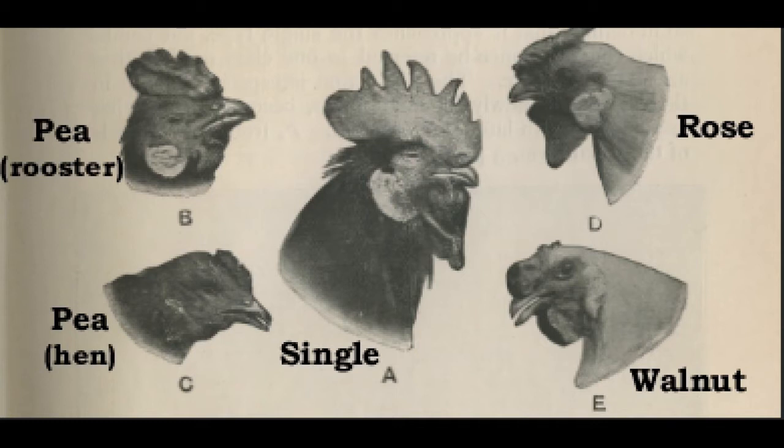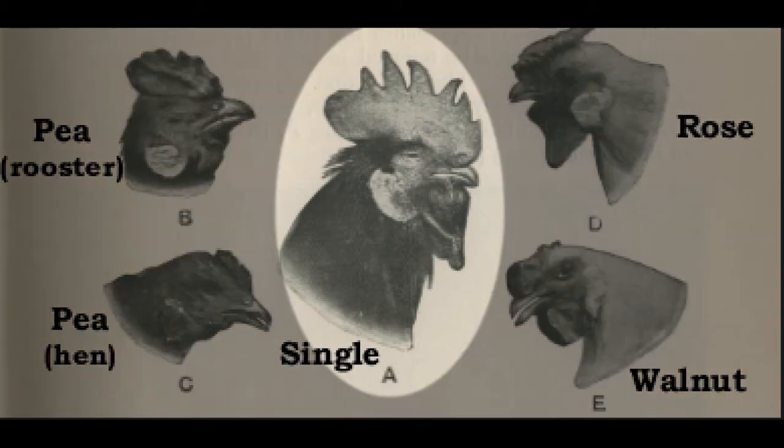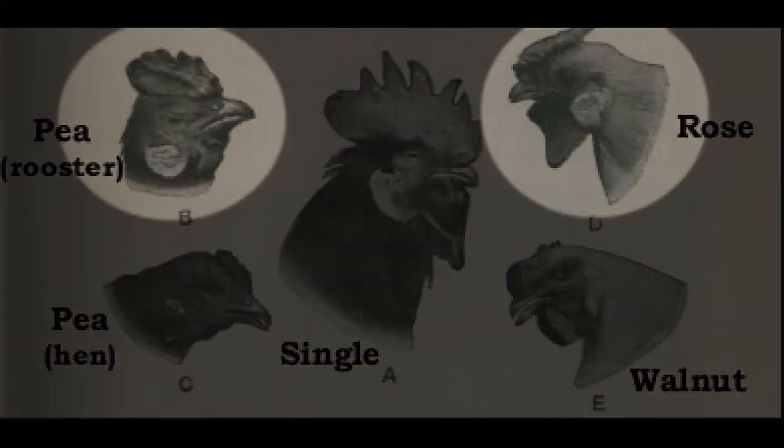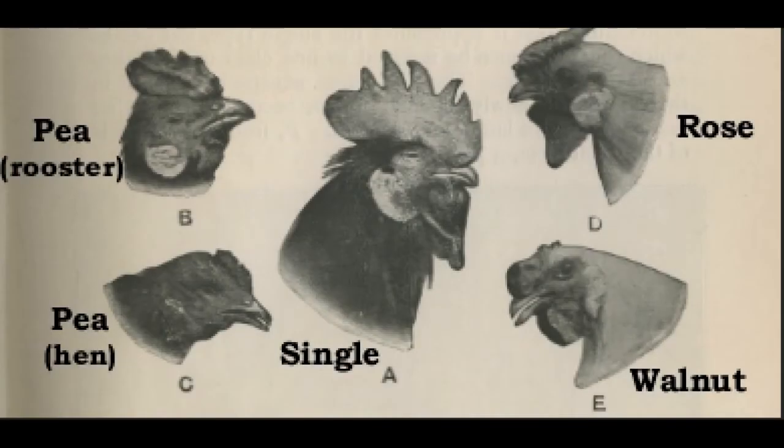They noticed that different pure breeds of chickens have different shaped combs, which they referred to as single, rose, and pea. You can see these phenotypes in this picture from Bateson's book, Mendel's Principles of Heredity, published in 1913.